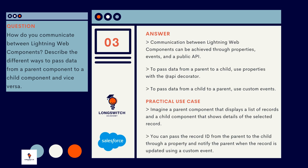Question number three: How do you communicate between Lightning Web Components? Describe the different ways to pass data from a parent component to a child component and vice versa. Communication between Lightning Web Components can be achieved through properties, events, and a public API. To pass data from a parent to a child, use properties with the @api decorator. To pass data from a child to a parent, use custom events. For example, imagine a parent component that displays a list of records and a child component that shows details of the selected record. You can pass the record ID from the parent to the child through a property and notify the parent when the record is updated using a custom event.